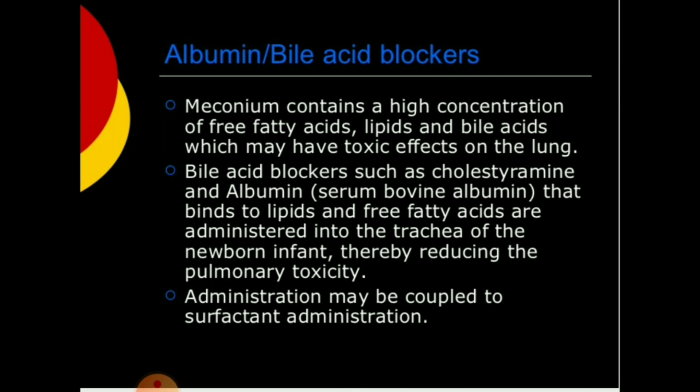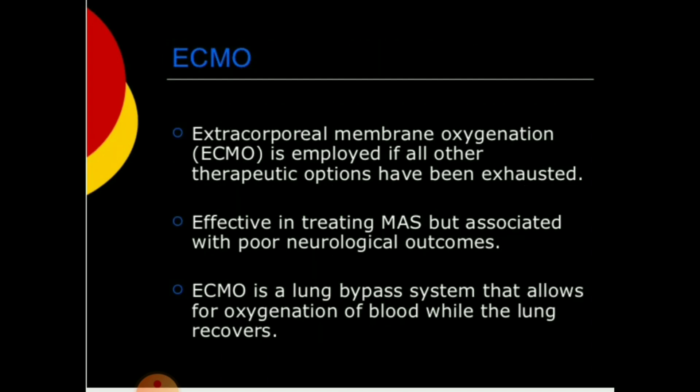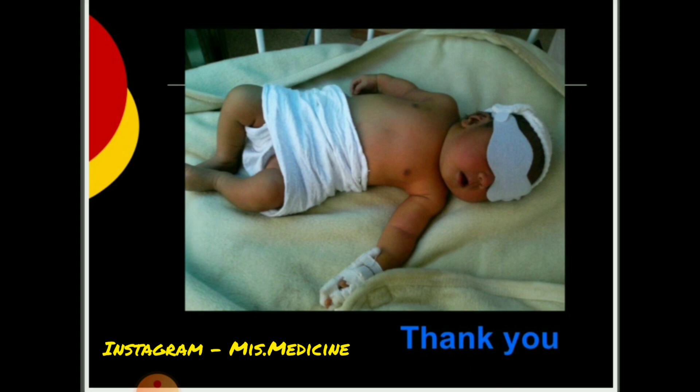ECMO (extracorporeal membrane oxygenation) is employed if all other therapeutic options have been exhausted. It is effective in treating MAS but is associated with poorer neurological outcomes. ECMO is a lung bypass system that allows oxygenation of blood while the lung recovers. I hope you got all the information about meconium aspiration syndrome. If you have any questions, you can write in the comment box.